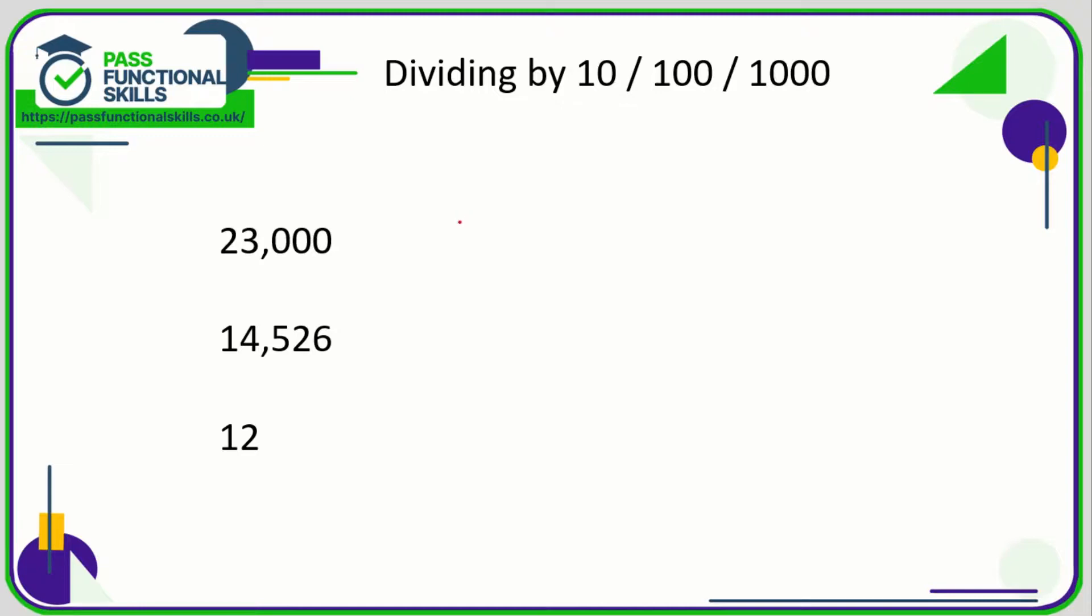Let's take a look at dividing by units of 10, so 10, 100, 1000, etc. If a number's got lots of zeros on the end, it's really easy. If you're dividing by 10 and there's a zero on the end, then just chop off a zero.